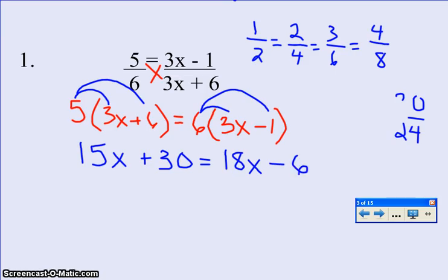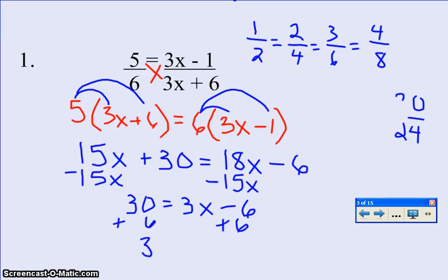Now it's just an algebra problem to solve. I'm going to subtract 15x from both sides. So I have 30 equals 3x minus 6, and then I need to add 6 to both sides, so I get 36 equals 3x. When I divide both sides by 3, I get x to be 12.